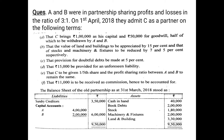I will explain the entries point by point before we see the full solution. The entry for capital and goodwill brought in by C would be: bank account debited Rs 1,50,000 — because Rs 1,00,000 is for capital and Rs 50,000 is for goodwill — to C's capital account Rs 1,00,000 and to premium for goodwill account Rs 50,000.